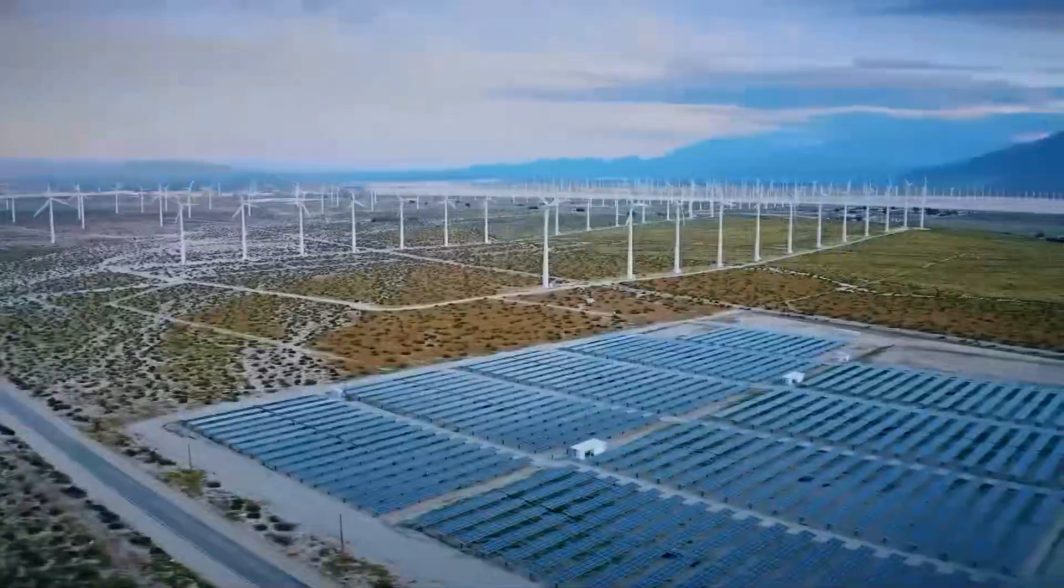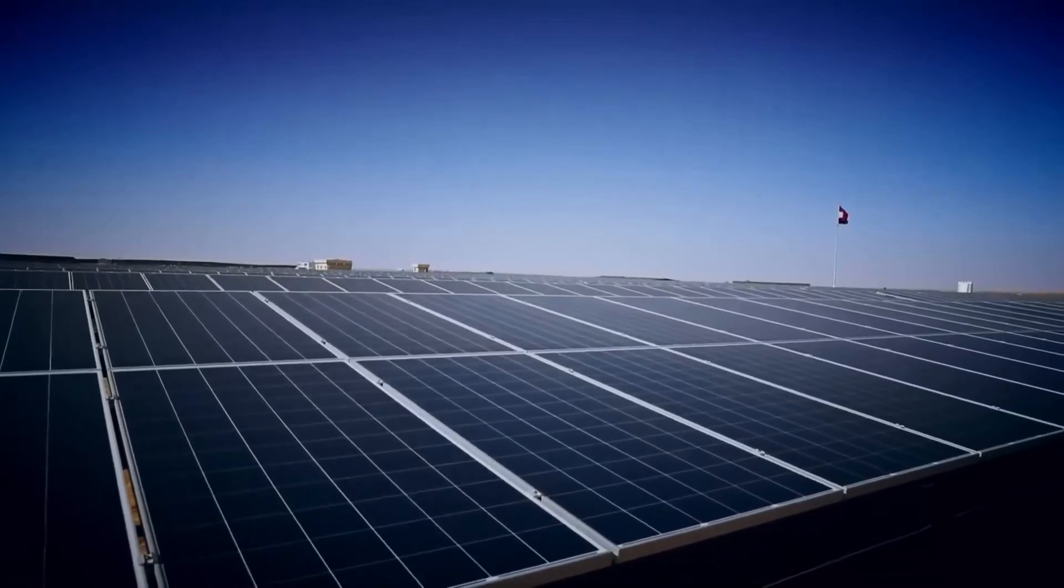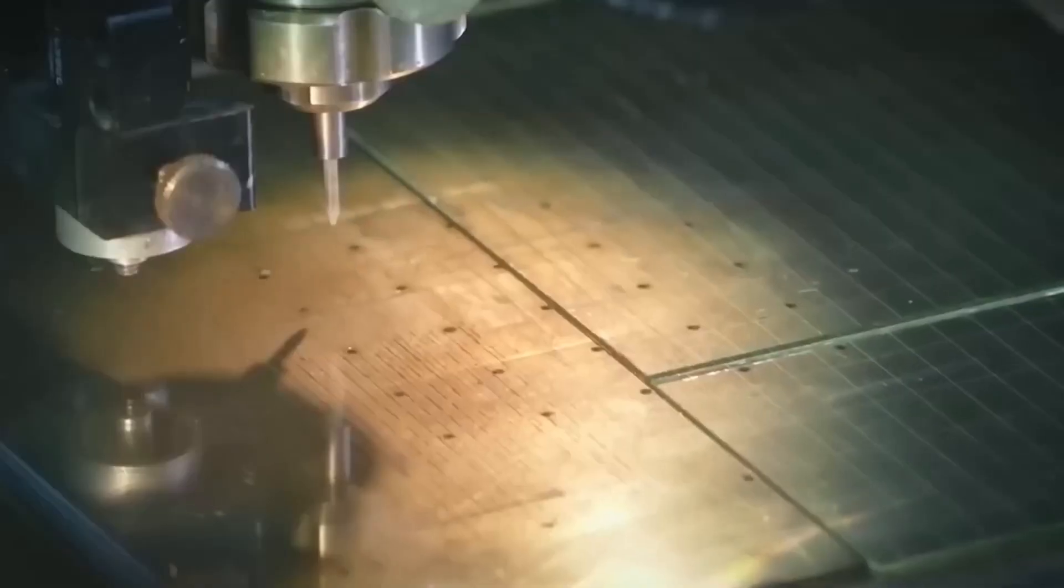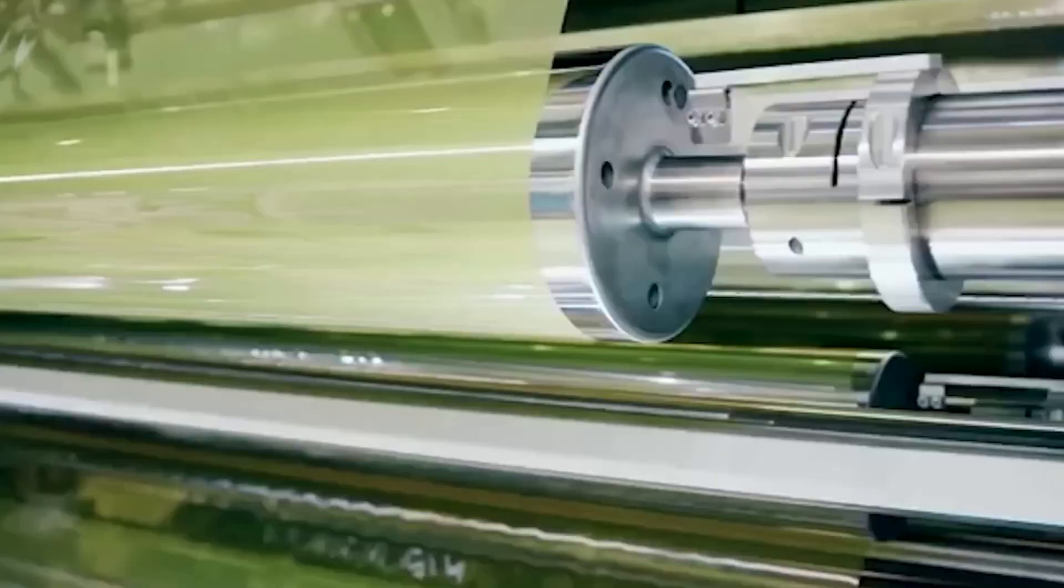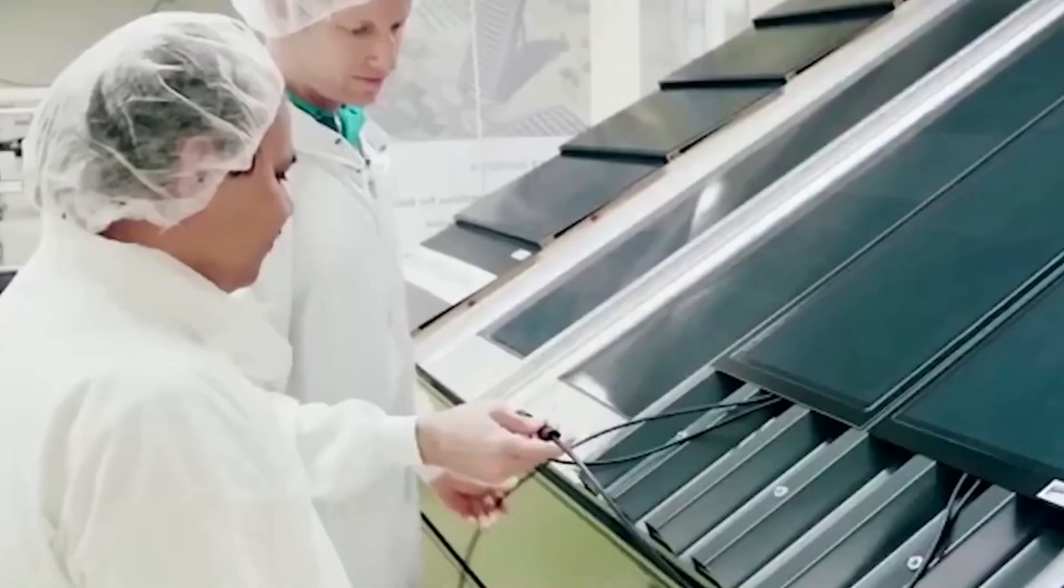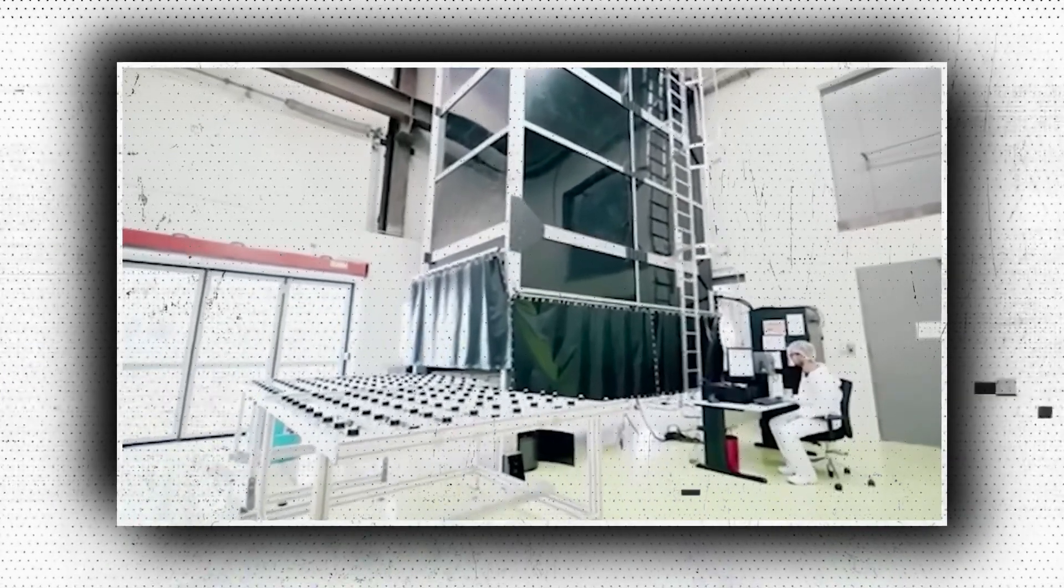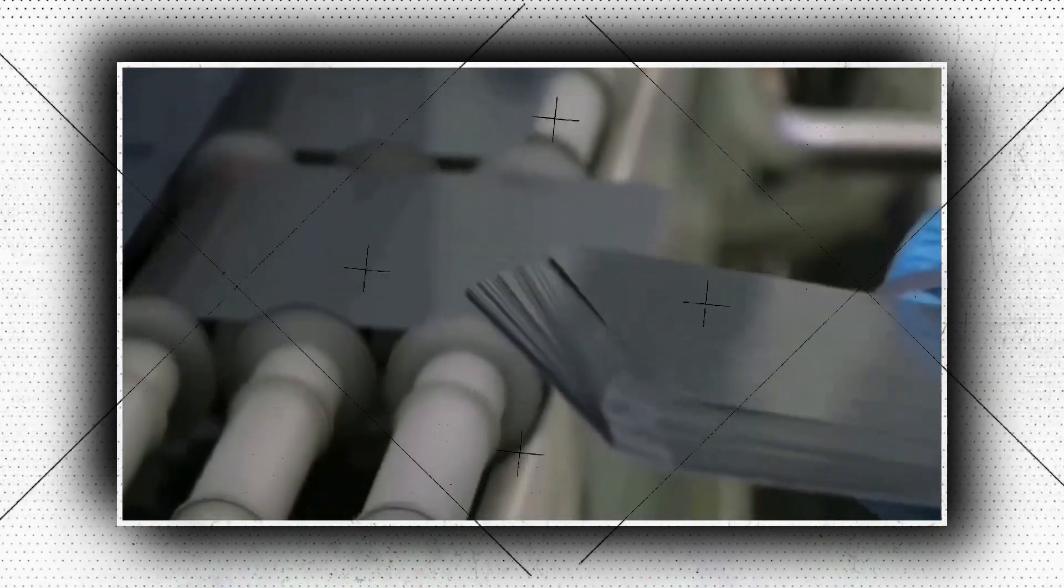A thin layer of photovoltaic material, such as amorphous silicon, cadmium telluride CDTE, or copper indium gallium selenide CIGS is applied to a substrate like glass or plastic to create thin-film solar panels. These panels are renowned for being both flexible and lightweight, making them appropriate for situations where standard panels might not be practical, like curved surfaces or portable gadgets. However, although costing $1 to $1.50 per watt, thin-film panels are typically less efficient than monocrystalline and polycrystalline silicon panels.